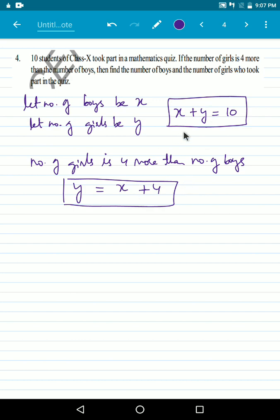We need to simplify these two equations to find the value of x and y. So the first equation is x plus y is equal to 10. And the second equation is y is equal to x plus 4. Now, what is the value of y from the second equation? It is x plus 4. Let us substitute this value of y in this equation. What are we doing? We are substituting this y is equal to x plus 4 in this.